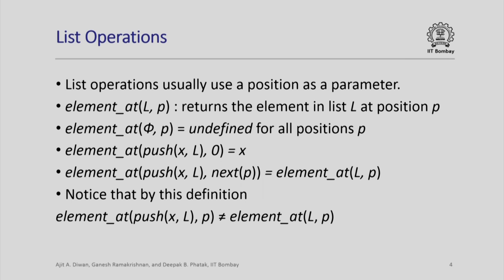Notice that in this definition the element position changes when we push an element in a list. The element at position p in push(x, l) is not necessarily equal to the element at position p in list l. For example, when we push x in l, x takes the 0th position, whereas the original element which was at the 0th position in l goes to position 1 in the new list obtained by pushing x.